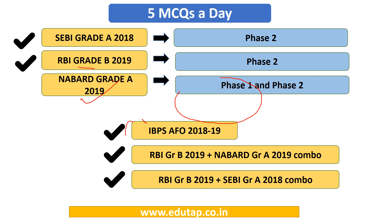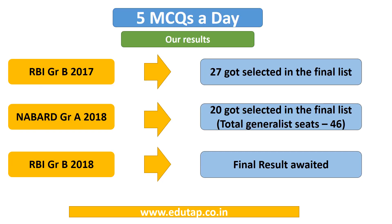We also have these three courses running. In RBI Grade B 2017, 27 Edutapians got selected in the final list. In NABARD Grade A 2018, out of the total generalist seats of 46, 20 students who got into the final list were from Edutap. We are awaiting the RBI Grade B 2018 result and we are sure that Edutapians will come out with flying colors.